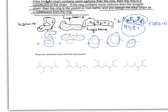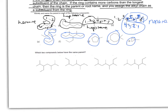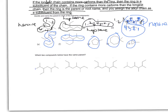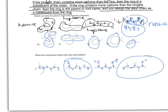The next example asks which two compounds have the same parent. Counting the carbons in the first compound gives seven. The second compound counts to nine. The third compound counts to eight. So the second one and the last one are both octanes.